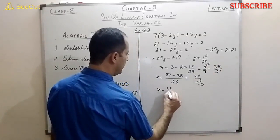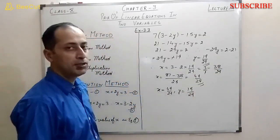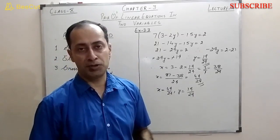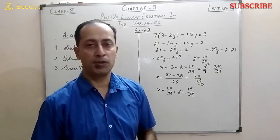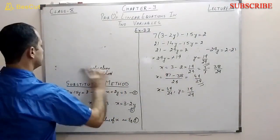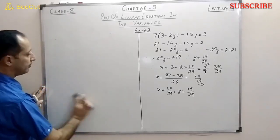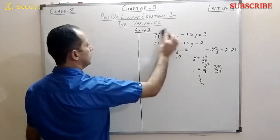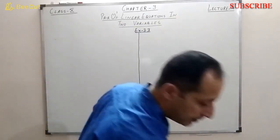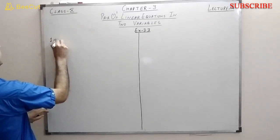So the solution is x equals 49 by 29 and y equals 19 by 29. That is the substitution method for finding solutions of a pair of linear equations. Now we will do some questions from Exercise 3.3. Today I will take only the first question, which has 8 parts. The first part is quite easy, so you can try it yourself. Let's start with the second part.